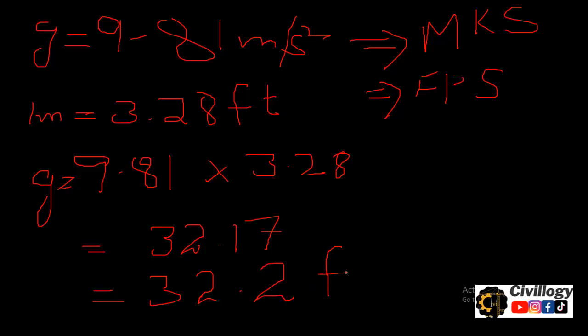Feet per second square. So in FPS system the value of g will become thirty two point two feet per second square.